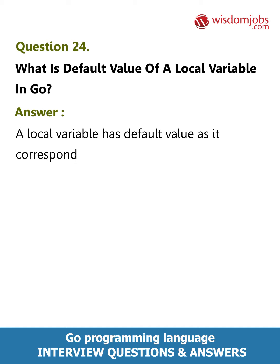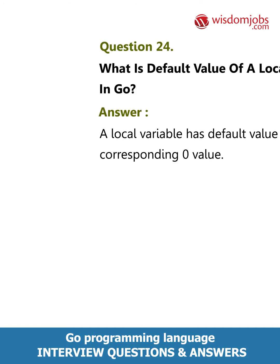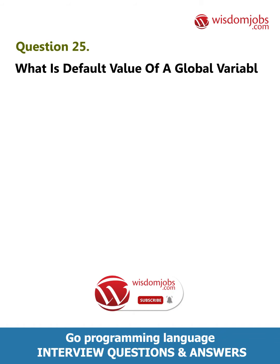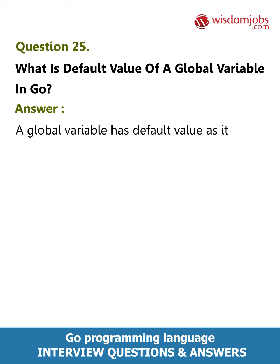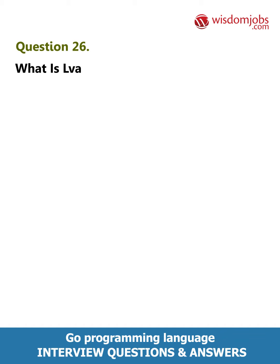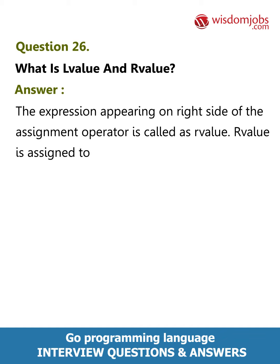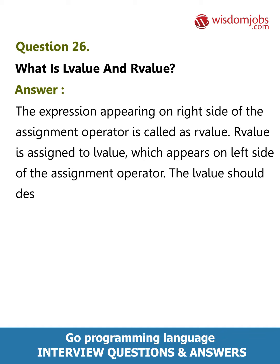Question 24: What is the default value of a local variable in Go? Answer: A local variable has a default value as its corresponding zero value. Question 25: What is the default value of a global variable in Go? Answer: A global variable has a default value as its corresponding zero value. Question 26: What is an l-value and r-value? Answer: The expression appearing on the right side of the assignment operator is called an r-value. The r-value is assigned to the l-value, which appears on the left side of the assignment operator. The l-value should designate a variable, not a constant.